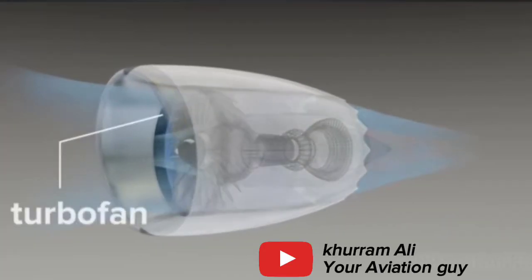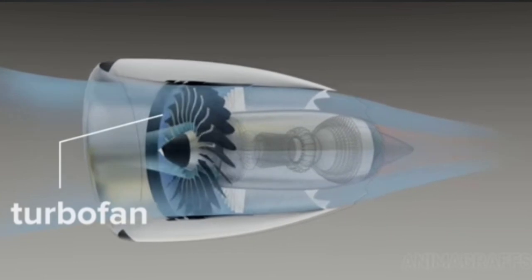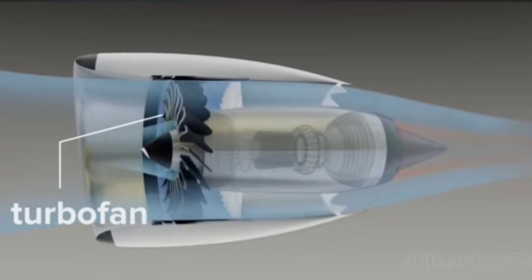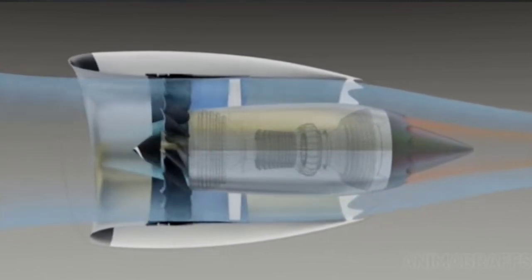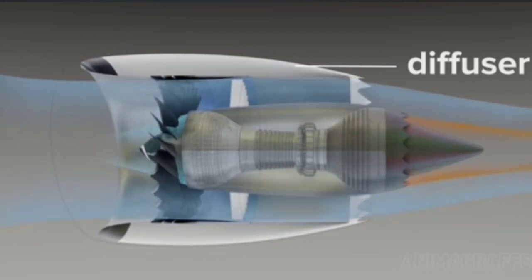Most jet-propelled airplanes use a turbofan design. The turbofan can be thought of as a high-tech propeller inside of a duct called a diffuser driven by a gas generator.